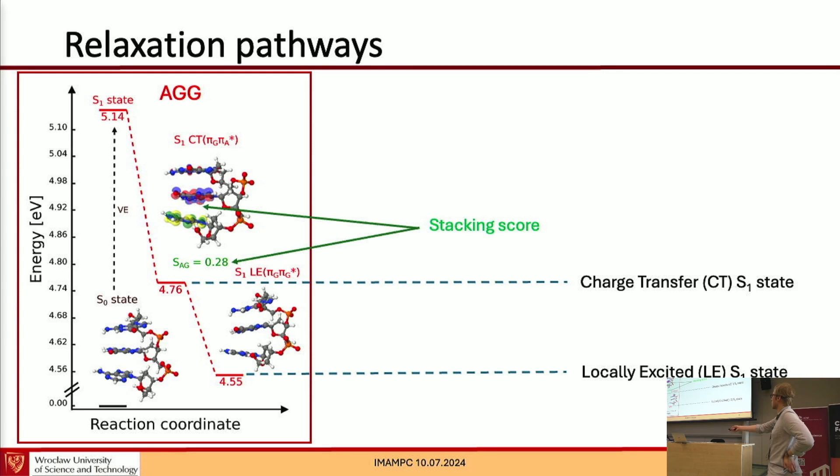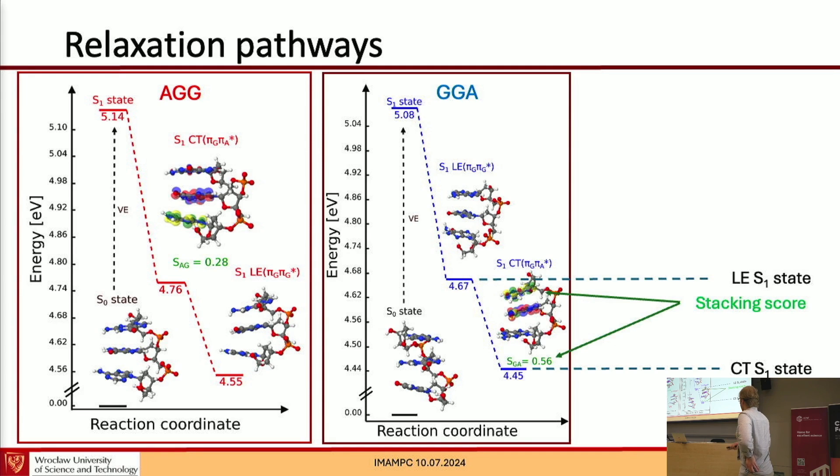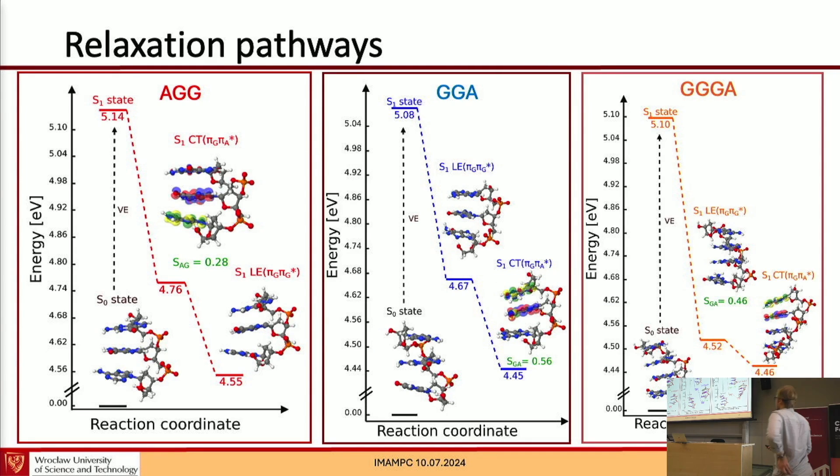And contrary to this, on the GGA system, the situation is reversed. The charge transfer state is now the lower one and the stacking score for this system is now twice as high as it was for the AGG system. And similar results were obtained for the other tetranucleotides. For example, here for the GGA nucleotide, the stacking score is 0.36. And the charge transfer state is the lower one.